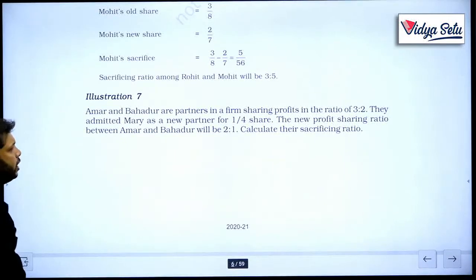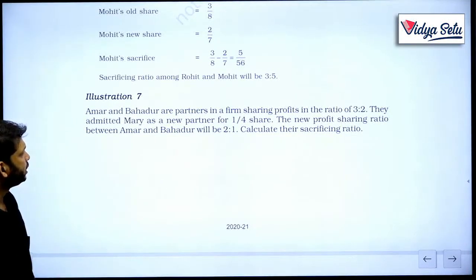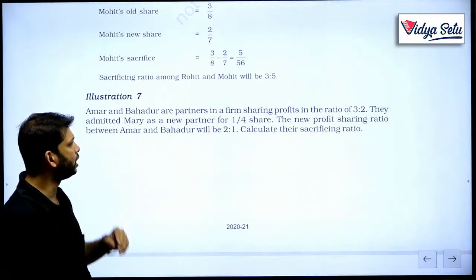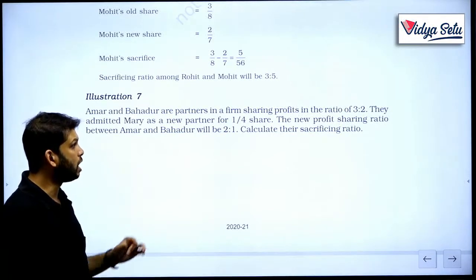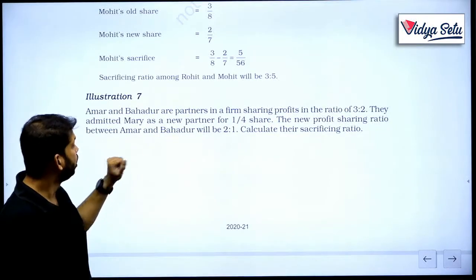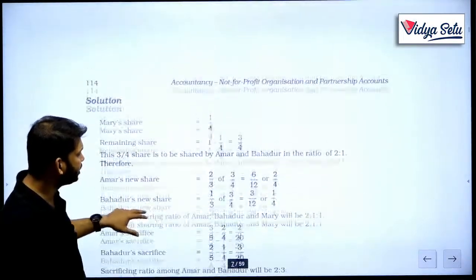Illustration 7. Amar and Bahadur are partners in a firm sharing profits in the ratio 3 is to 2. They admitted Mary as the new partner for 1 upon 4 share. The new profit sharing ratio between Amar and Bahadur will be 2 to 1. Now again we know the old ratio, we know the new ratio among only these two. So let's find out the sacrificing ratio.